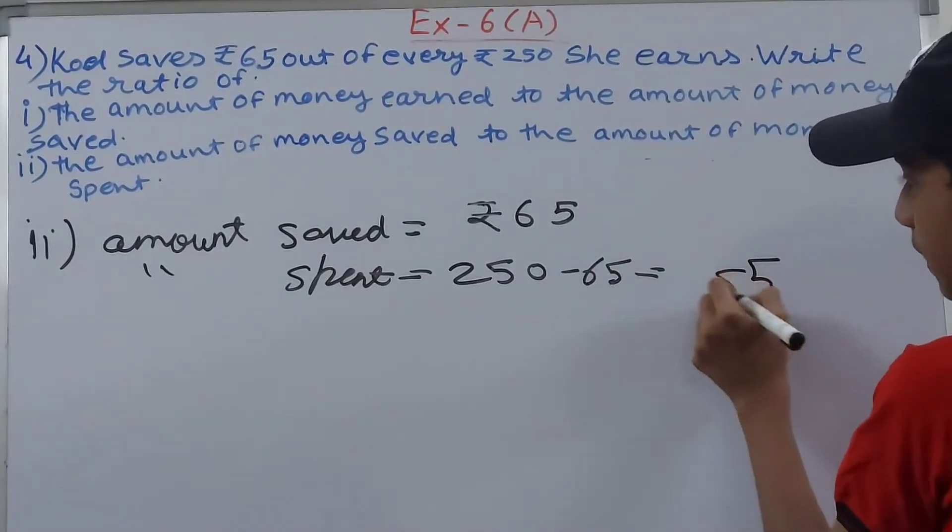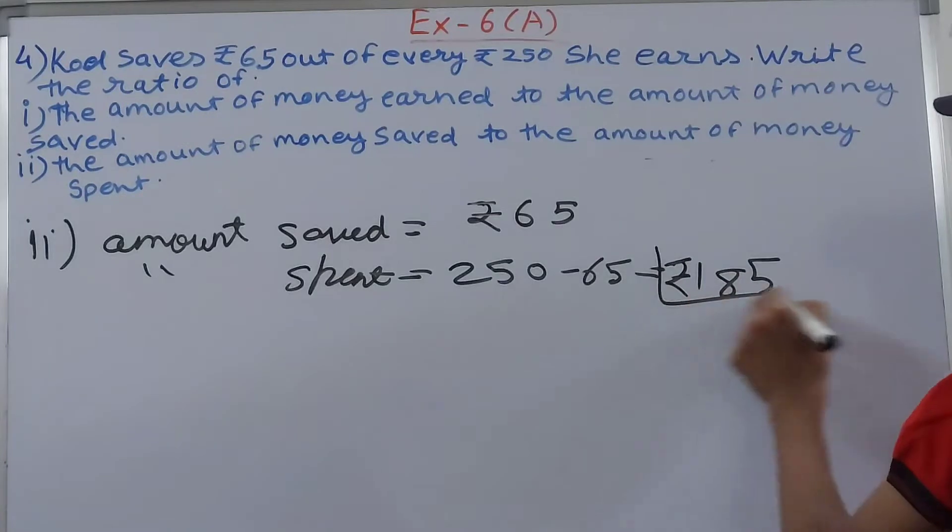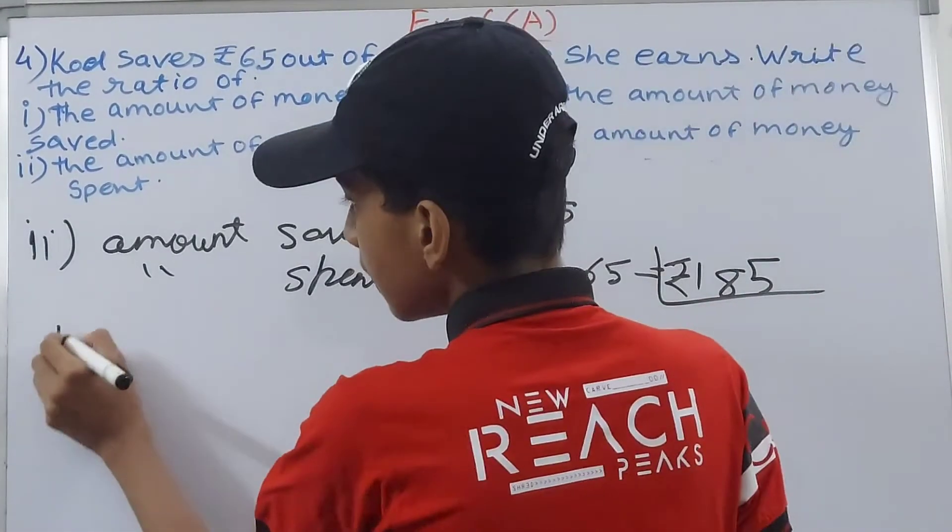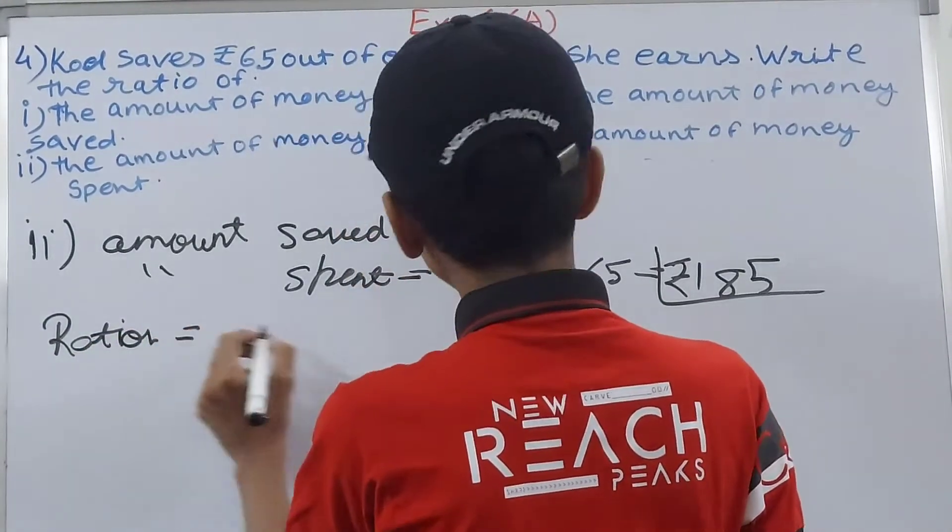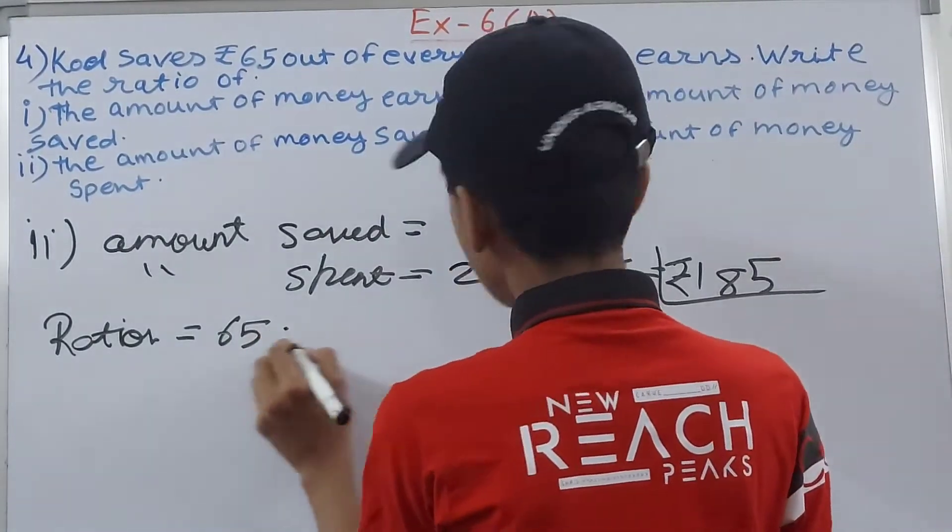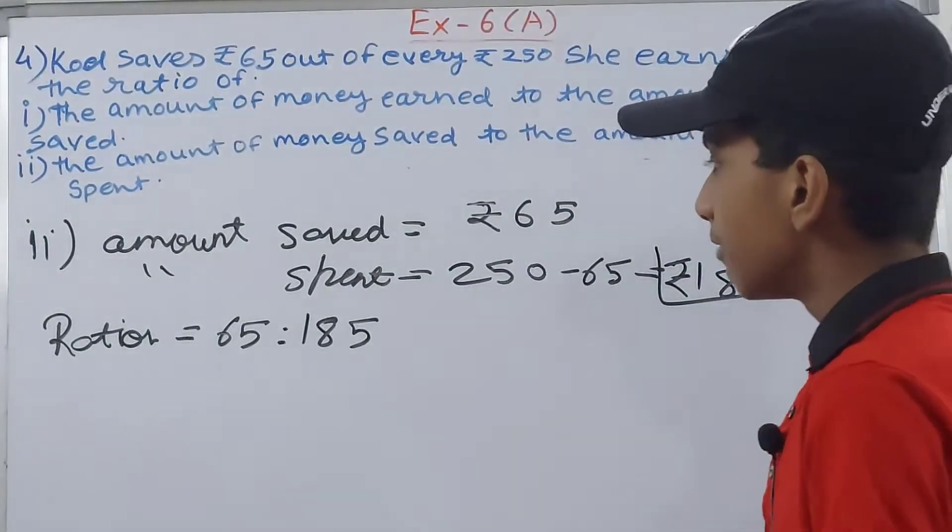Now the ratio between both of them becomes how much? 65 is to 185. So again we will solve it. We will have first of all in a fraction 65 upon 185.